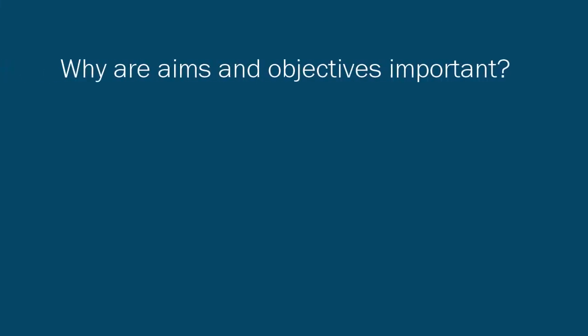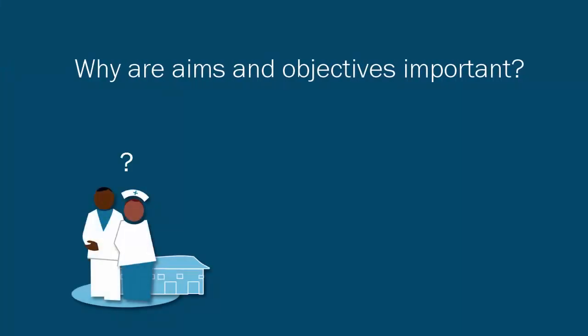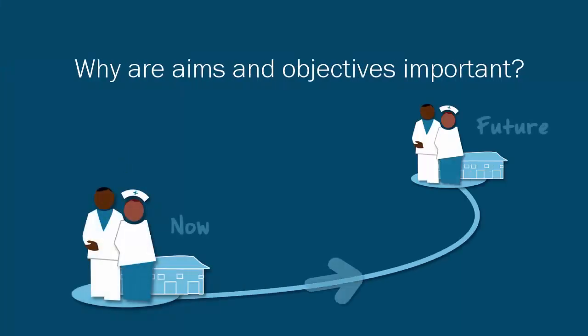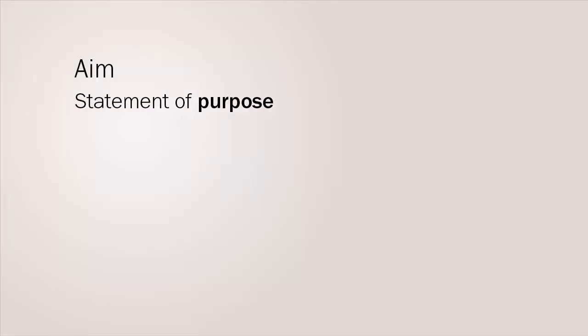Why are aims and objectives important? They provide a direction and focus for change. They also provide a justification and a way to measure the plan being undertaken. An aim is a short general statement of the purpose of the plan. It explains why a project is needed.